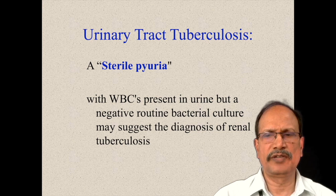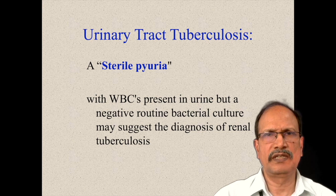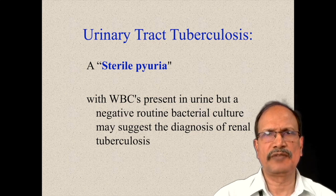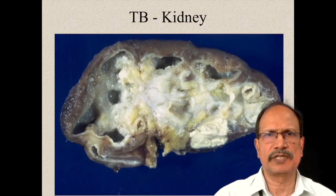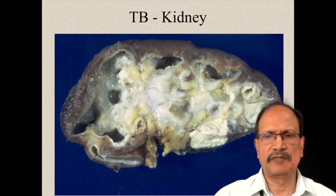The peculiarity of urinary tuberculosis is production of sterile pyuria. The patient will have urinary tract symptoms and when you examine the urine, there are many pus cells but culture will be negative again and again. When a person's urine shows many pus cells and repeated cultures are proven to be negative, think of the possibility of urinary tract tuberculosis or kidney tuberculosis. Here you can see the kidney involved in tuberculosis: the yellow or gray-white areas represent granuloma and caseous necrosis, and there is a dilated pelvicealyceal system probably due to obstruction.